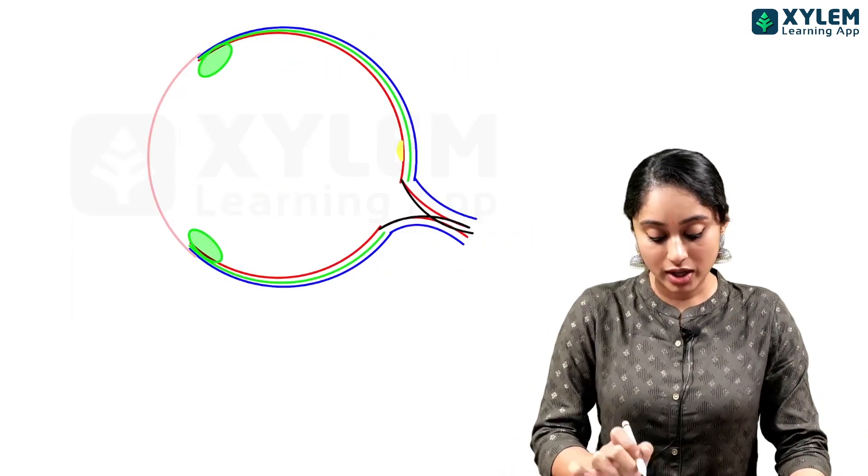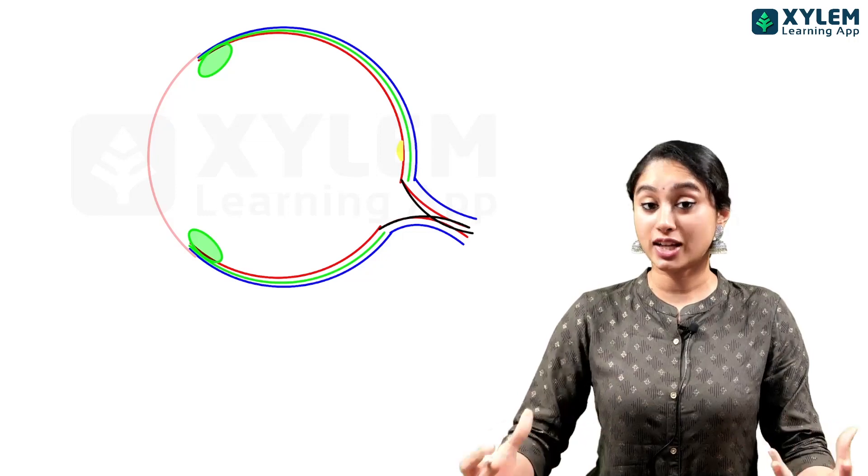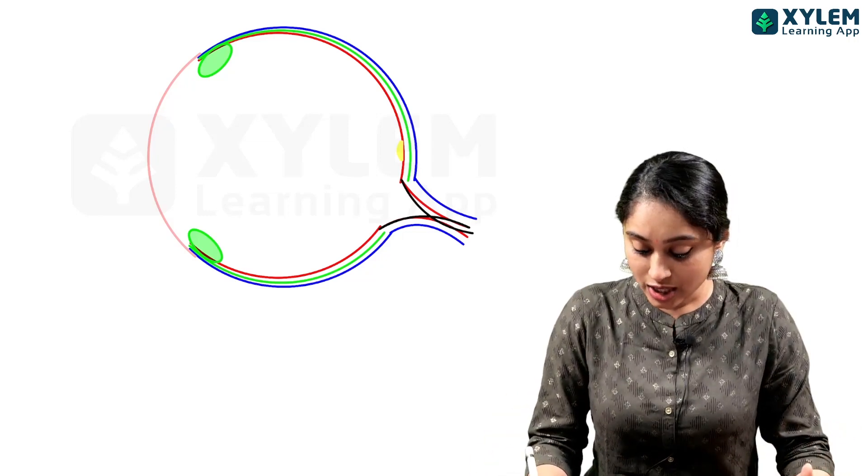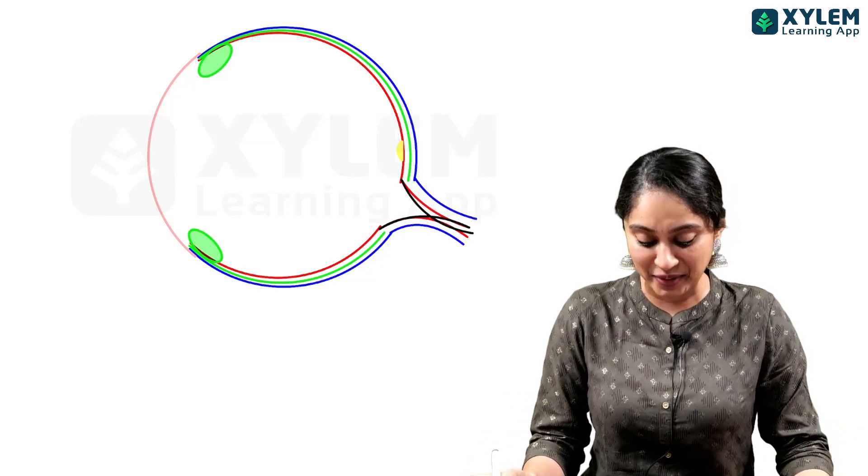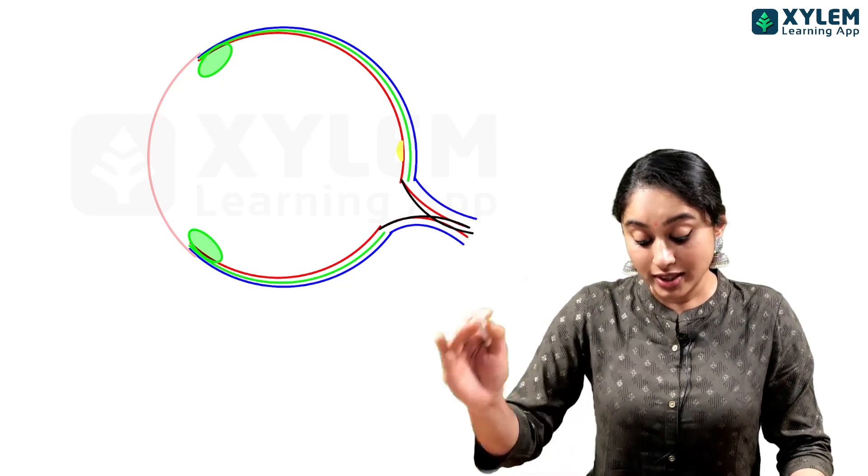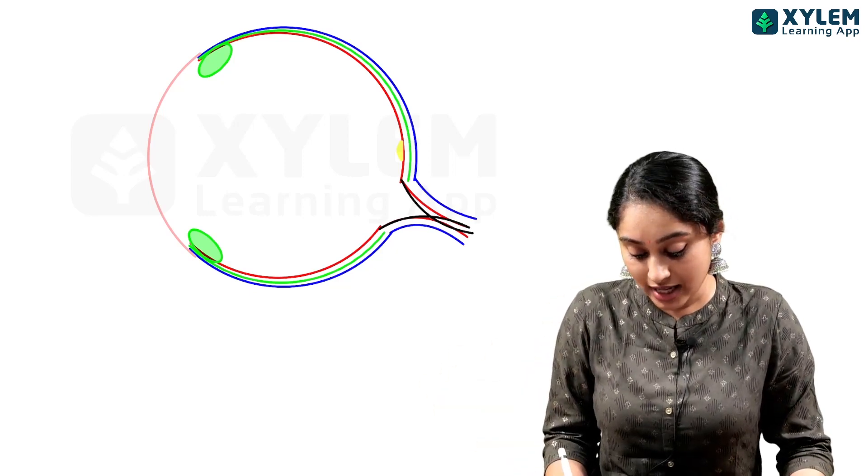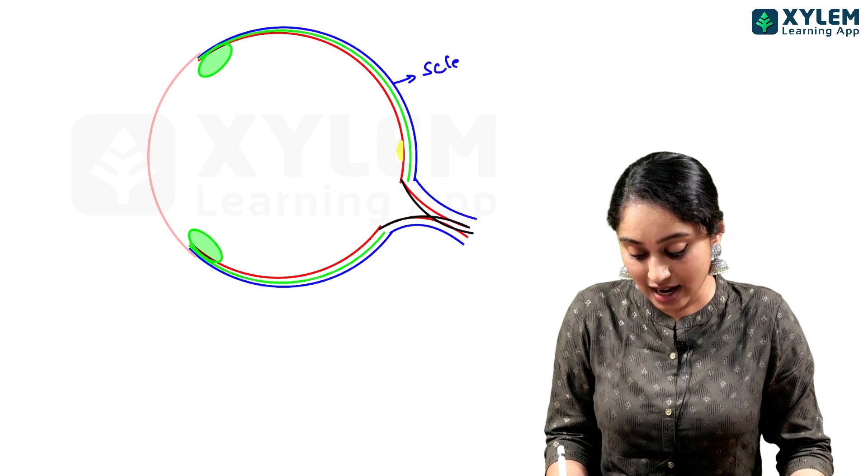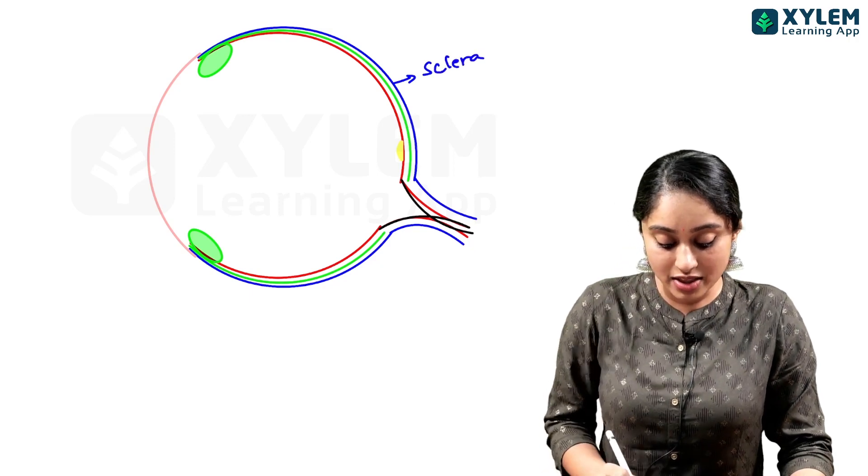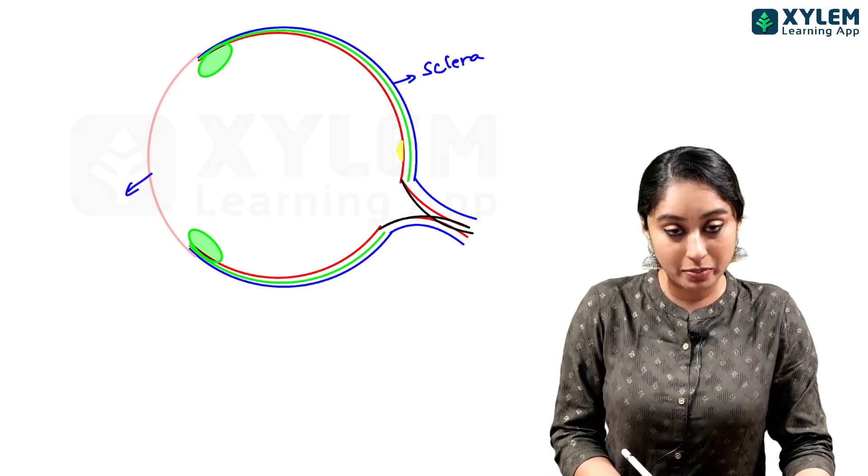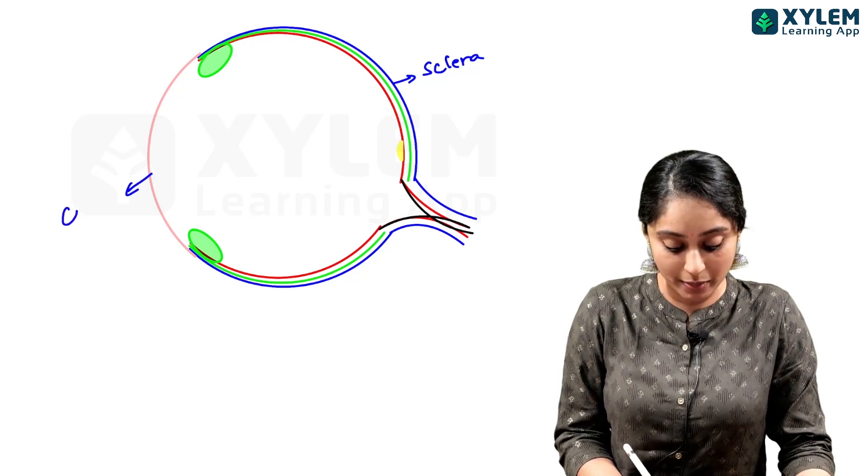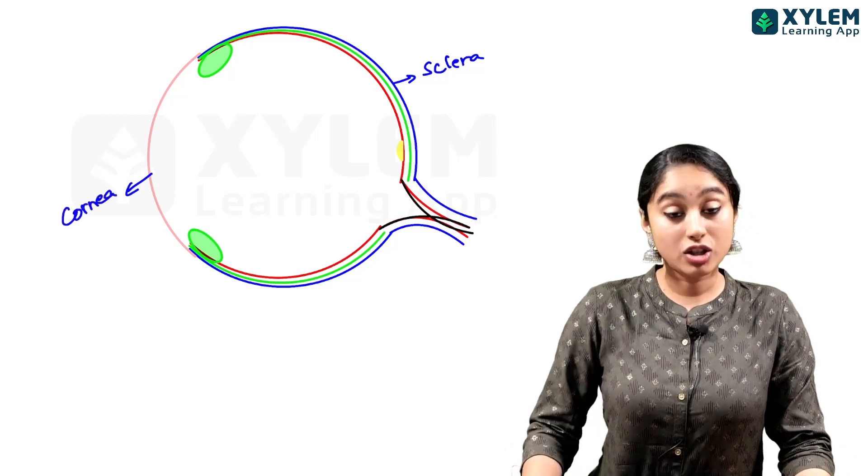If we look at the parts of the eye, we are going to examine the structure of the eye. The most outermost region of the eye is called the sclera, and the sclera's anterior portion becomes slightly transparent. That is the cornea.